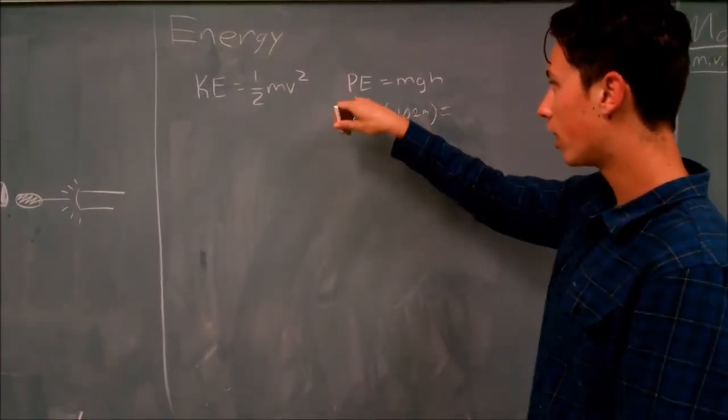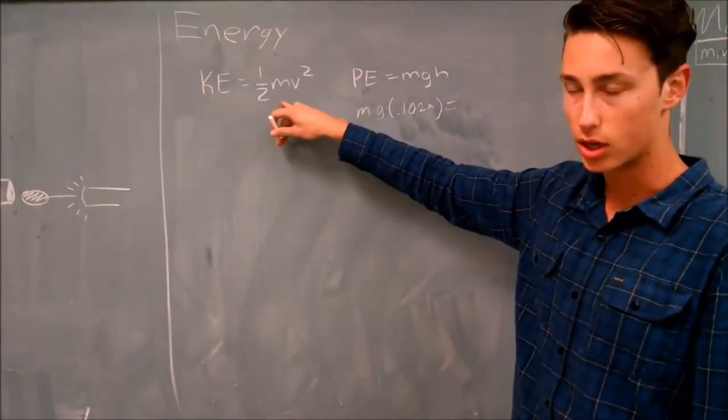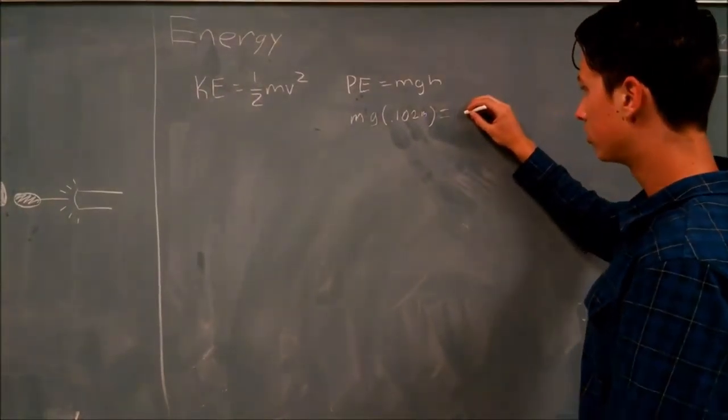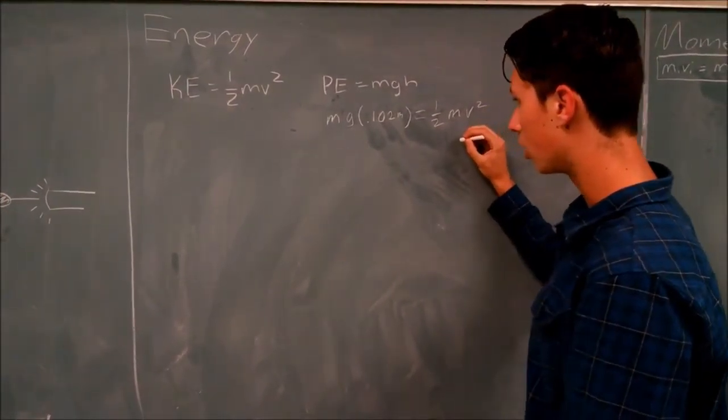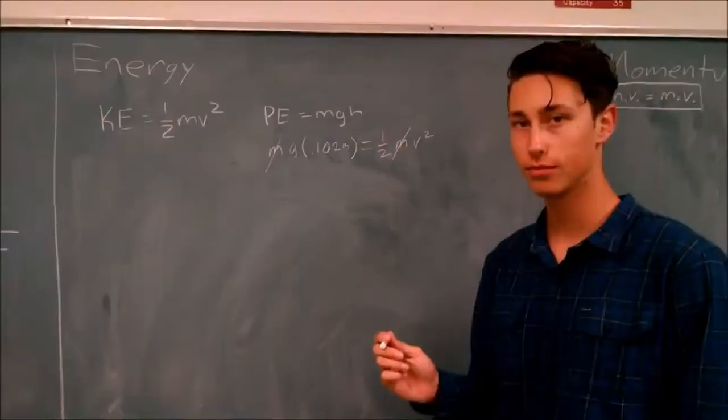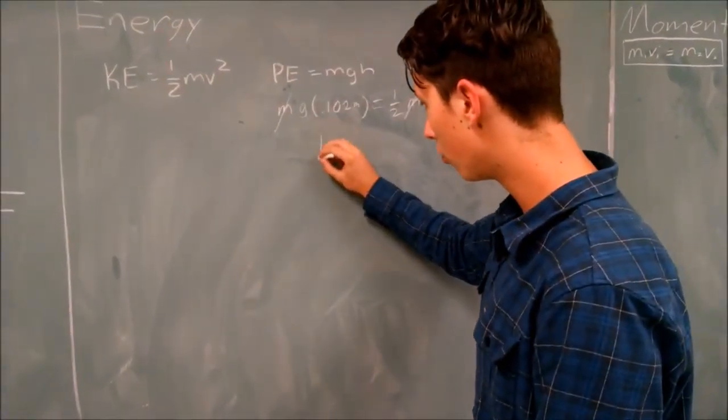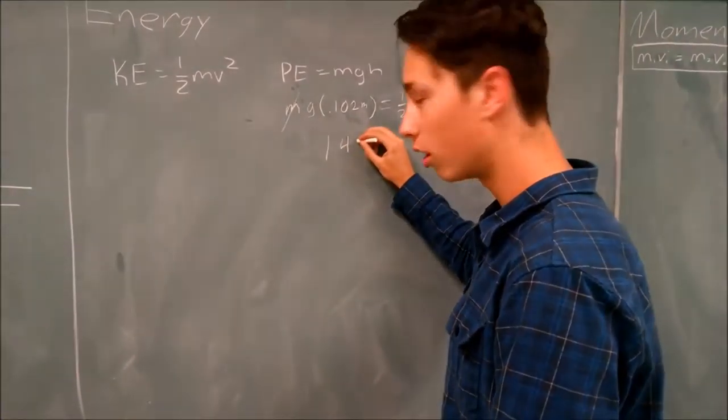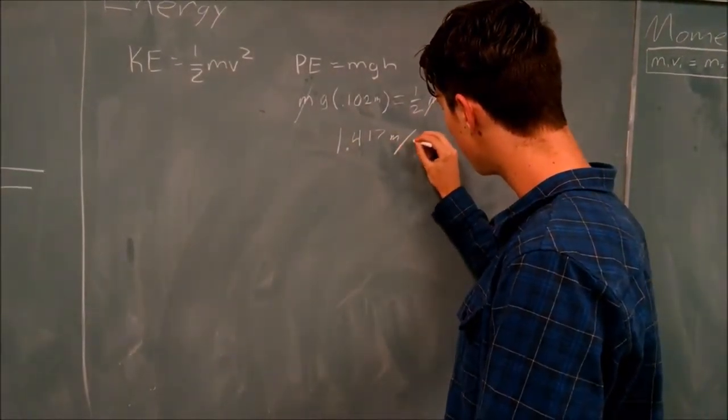So we can set the final potential energy at the apex equal to the kinetic energy right at the impact. So we're going to set this equal to 1 half mv squared. And you'll see here, the mass is unimportant because those are going to cancel. And when we solve for the final velocity, we end up with 1.417 meters per second.